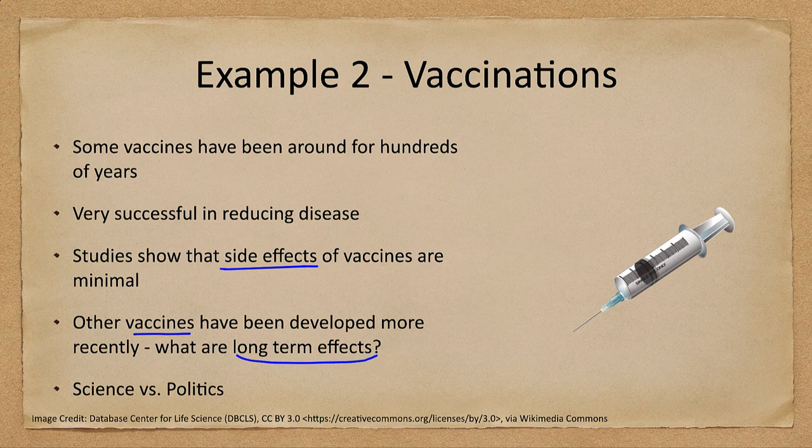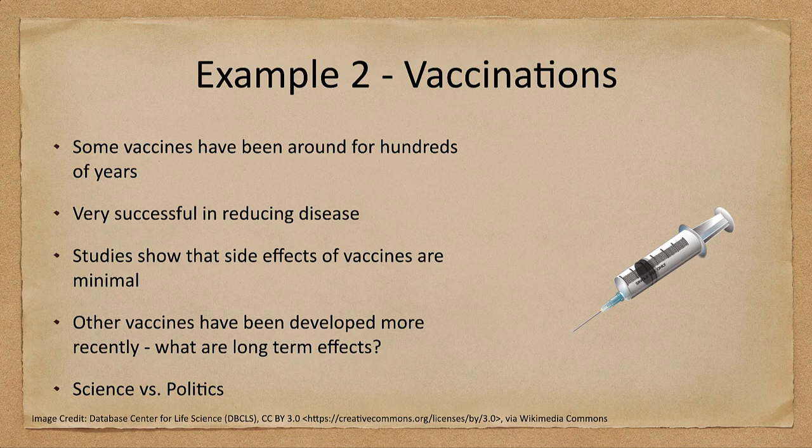This becomes part of the relationship between science and politics. Scientists can say what is, what should be done, and what the possible results will be. But some things are not necessarily politically viable or may not work in a specific situation, so you may not be able to do something even if it might be the best idea according to science.